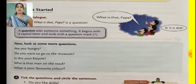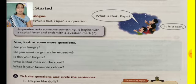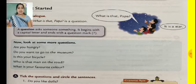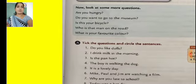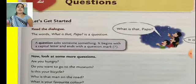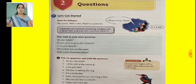You have to keep in your mind that a question asks someone something — it begins with a capital letter and it ends with a question mark. Now look at some more questions: Are you angry? Do you want to go to the museum? Is this your bicycle? Who is that man on the road? What is your favorite color? All these are questions. See the first letter — first letter of every question is a capital letter, and at the end it is a question mark.